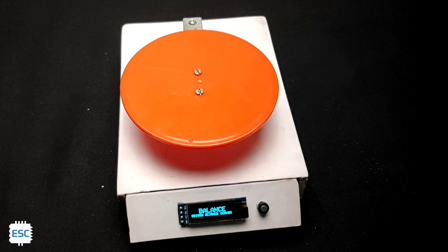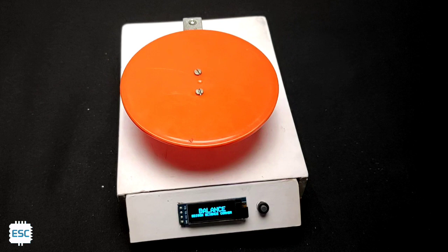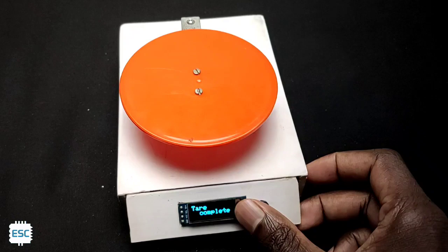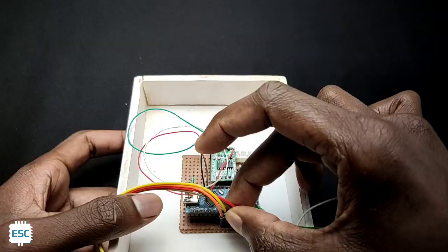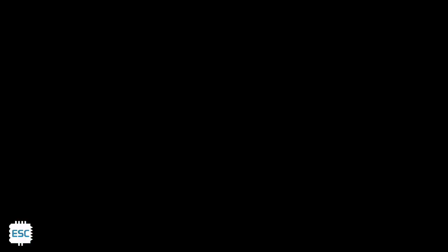Now you can see the weighing machine. It has an OLED display, obviously to display the weight and a button to tare the weight. So in this video, I am showing how I made this more portable Arduino based digital weighing machine. So let's get started.